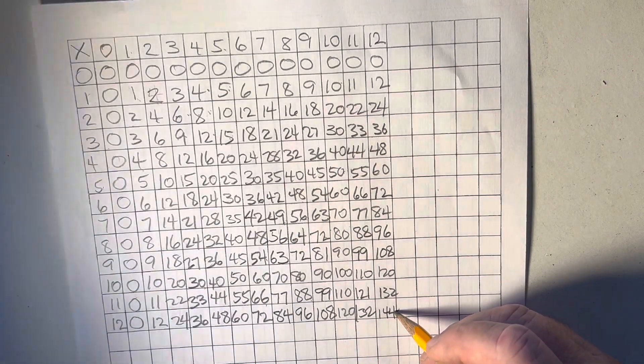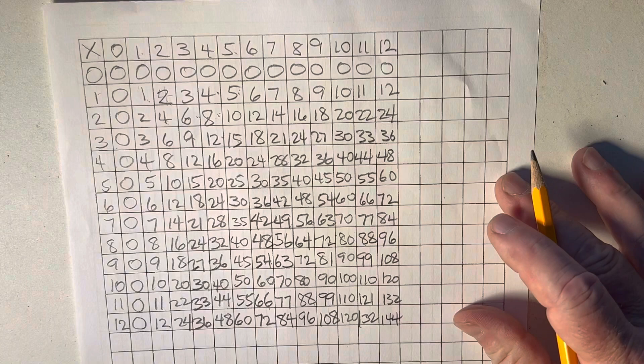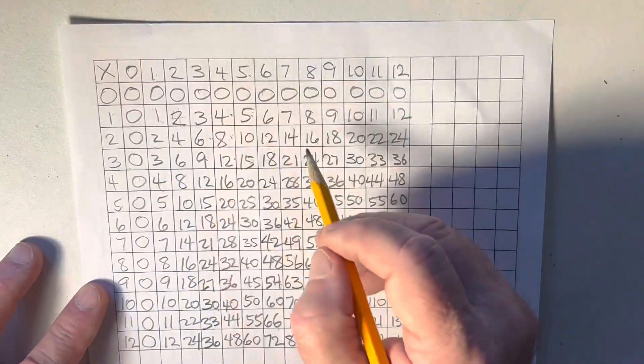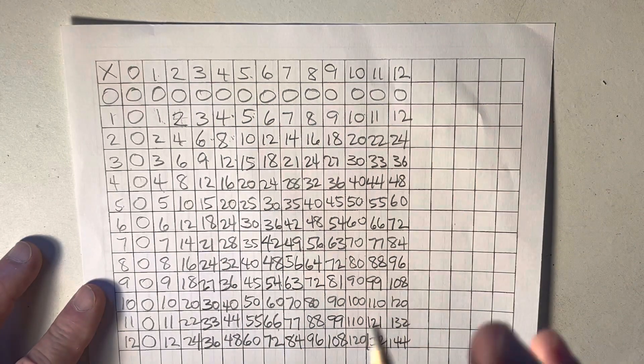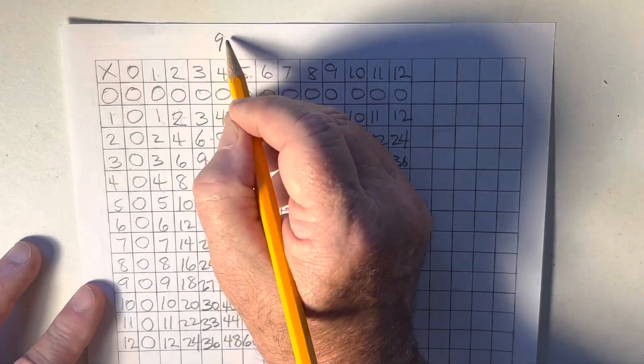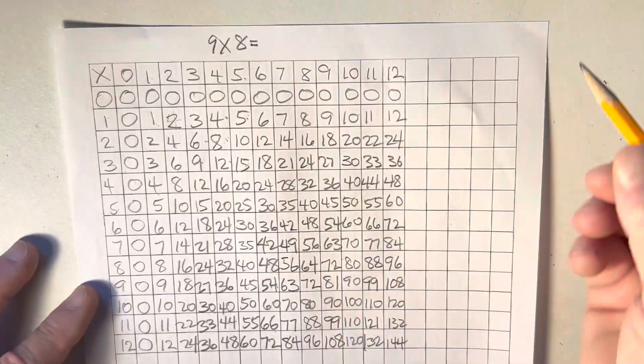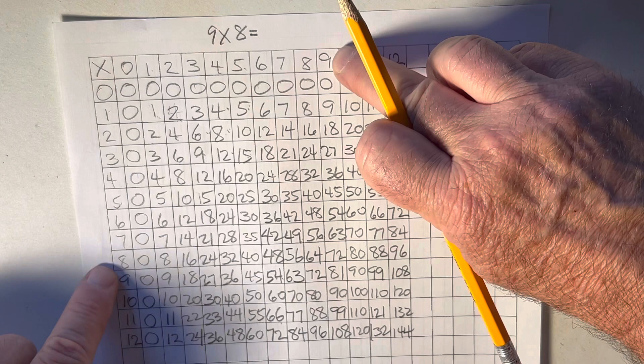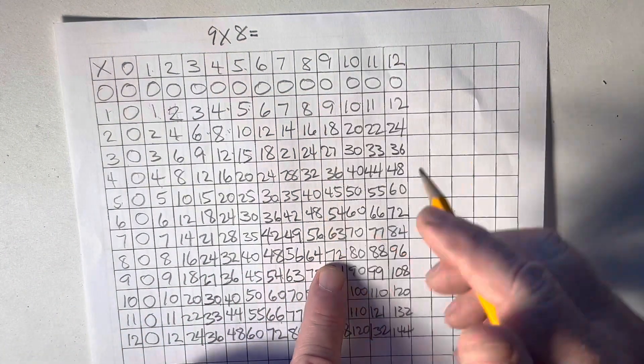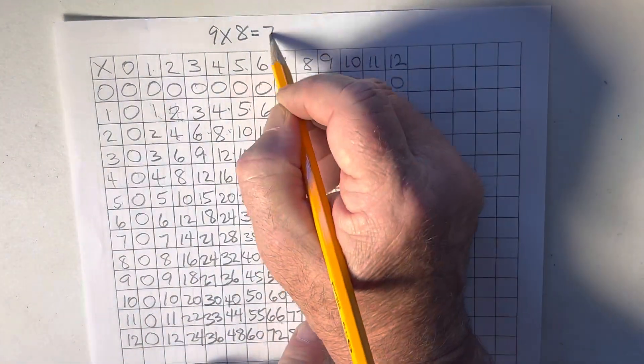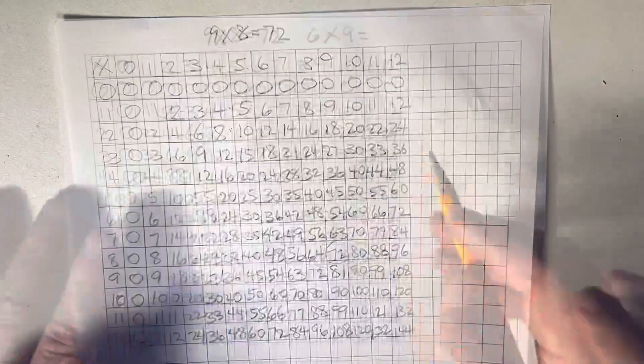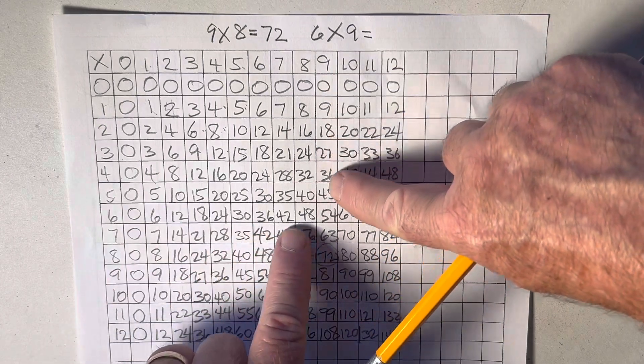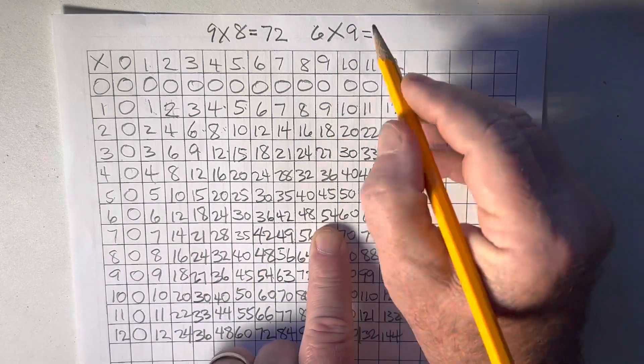This is our multiplication chart that we can use now to multiply. Now, let's give a problem, for example. And this is just simple one number of multiplications. Let's say 9 times 8. All right? So, I go, I look over here. Here's 9 and here's 8. 9 times 8. 9 times 8 is 72. Now, let's do another one. 6 times 9. Go all the way down here where they meet, and that's 54. 54.